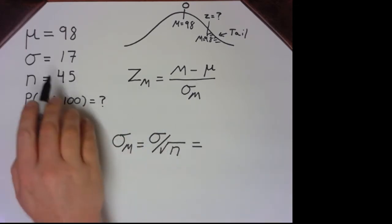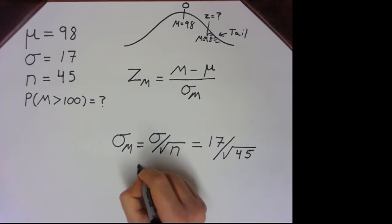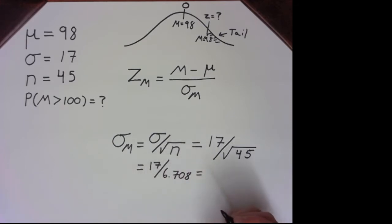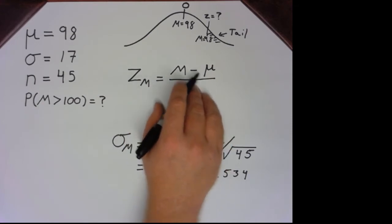Now the reason I do it this way is because it gives you these discrete subgoals. So now we're going to find our standard error, and then eventually we'll plug that into our formula above. So square root of 45, 6.7 and change, divide that into 17, our population standard deviation. We now have our standard error.